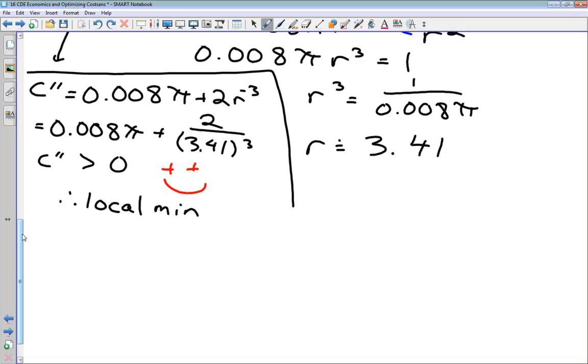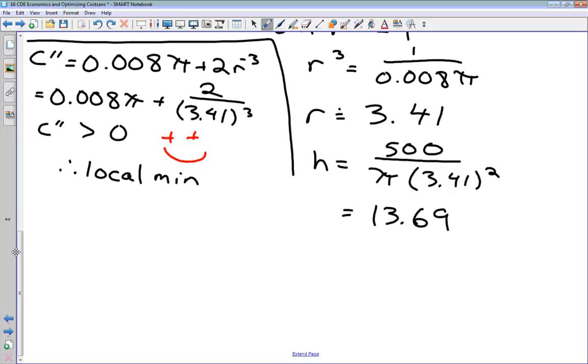What were we asked in the original question? We were asked for the dimensions. We've got one of our dimensions, which is radius. We have to go back and find the height. We found this formula for height: h = 500 divided by πr². So 3.41 squared, plugging that in, we get 13.69. So those are the dimensions that minimize our cost. The can should have a radius of 3.41 centimeters and a height of 13.69 centimeters.